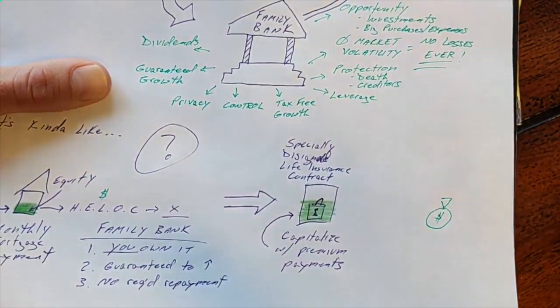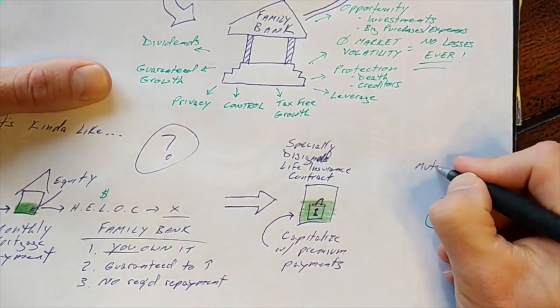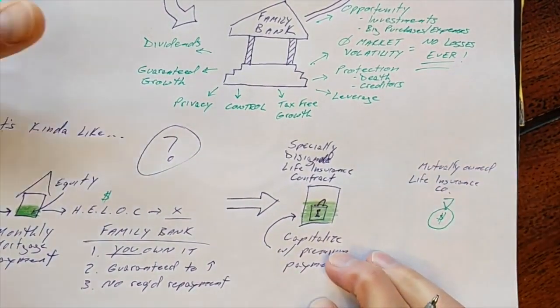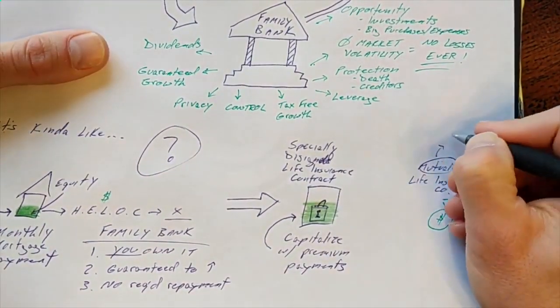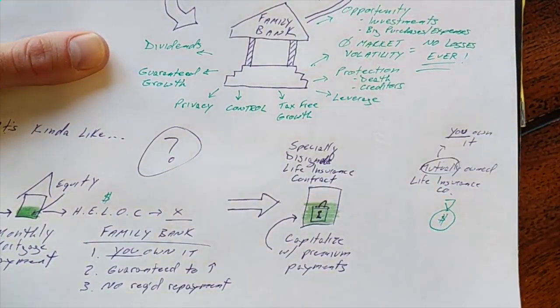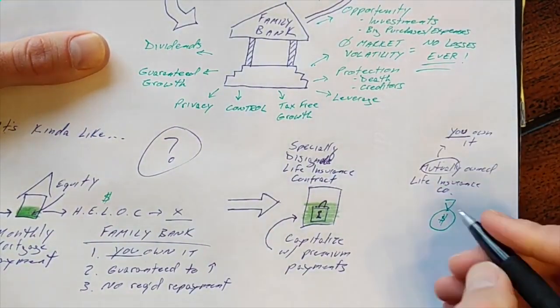Now, over here, we have a separate pot of money. This money are reserves held by a mutually owned life insurance company. Now, what does mutually owned mean? Well, simply put, you own the company. Not stockholders, but you, the policy owner.